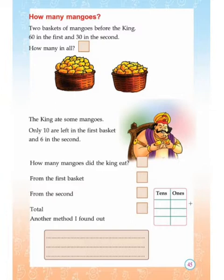60 in the first basket and 30 in the second. How many in all? You all know how to add numbers, so everyone add 60 and 30 and write in that column. 60 plus 30 equals 90.